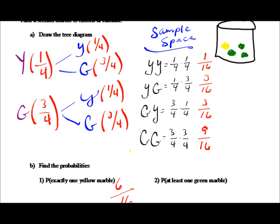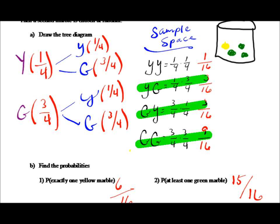Now the probability of getting at least one green marble — that's one or more. We get one or more here, one or more here, and one or more here. That's nine, ten, eleven, twelve, thirteen, fourteen, fifteen out of sixteen times we will get at least one green marble. So the probability is fifteen out of sixteen. I simply added the probabilities of those green events.